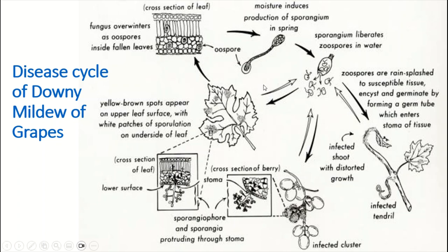The disease cycle of Downy Mildew of Grapes: the plant is infected via shoots or tendrils. This infection is directly transmitted to the berries as well.